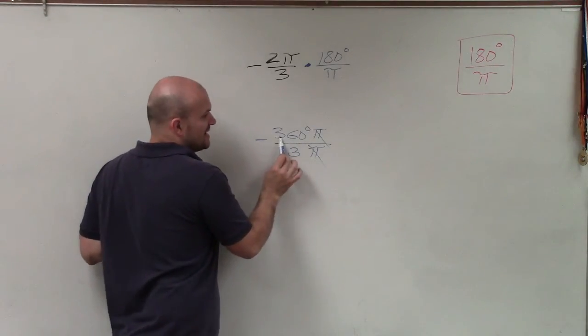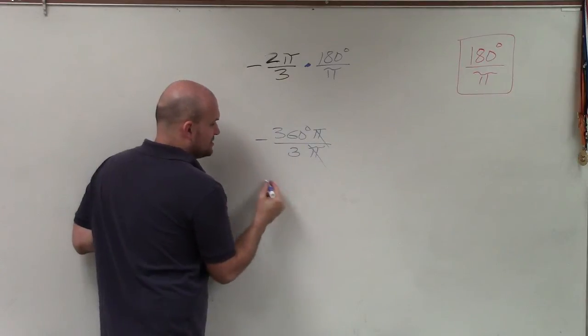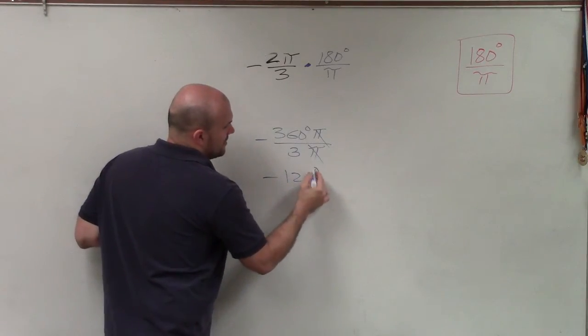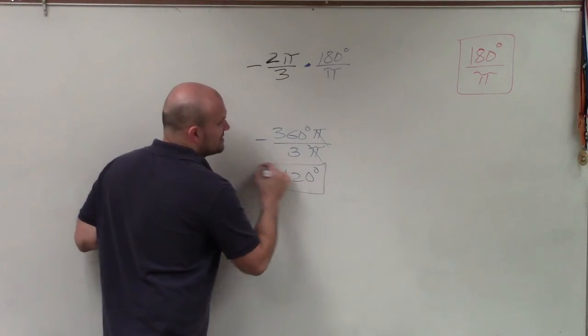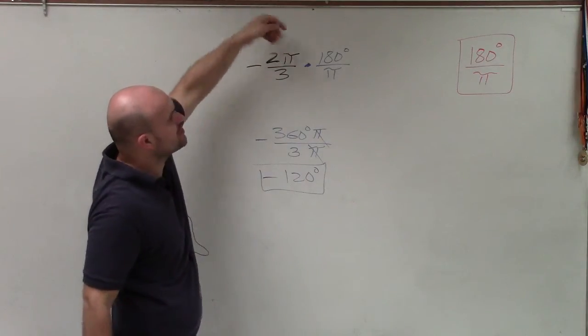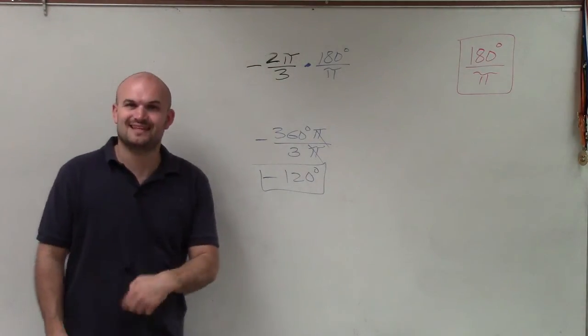And then I just take 360 divided by 3, which is 120, and I'm left with negative 120 degrees as my degree measure from the conversion of negative 2π over 3 in radians. Thanks.